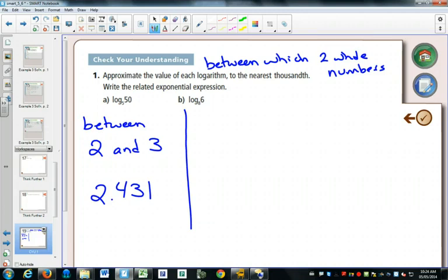Think of your powers chart. Between what two whole numbers would you find 6? Well, 8 to the 1 is 8, and 8 squared is 64, so it's between 0 and 1.